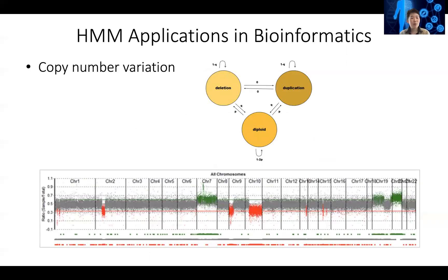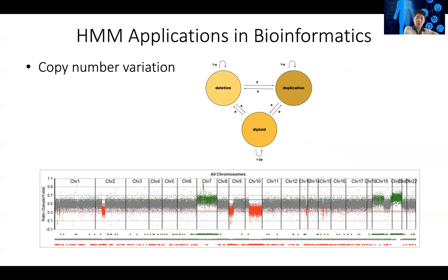Another example for using hidden Markov model is to predict copy number variations in the genome. You can imagine this as either a sequencing result or, in early days, a microarray result. In microarray days, you use some reference genome — across the genome we should have two copies of chromosomes. You use some average genome as your control and another person's genome for whatever condition you want to see, and compare their coverage across the genome.